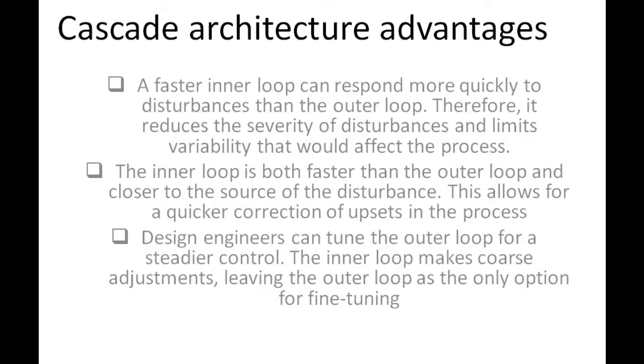In general, the cascade architecture provides the following advantages. A faster inner loop can respond more quickly to disturbances than the outer loop. Therefore, it reduces the severity of disturbances and limits variability that would affect the process.